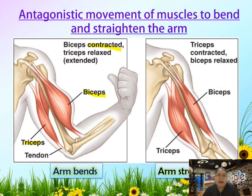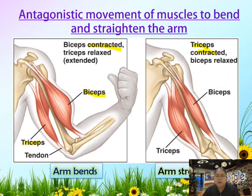The tricep will be relaxing. Relaxing means it extends and becomes longer. When the arm is to be straightened, the tricep now contracts and the bicep now becomes relaxed. So in this situation, both muscles move in opposite directions.